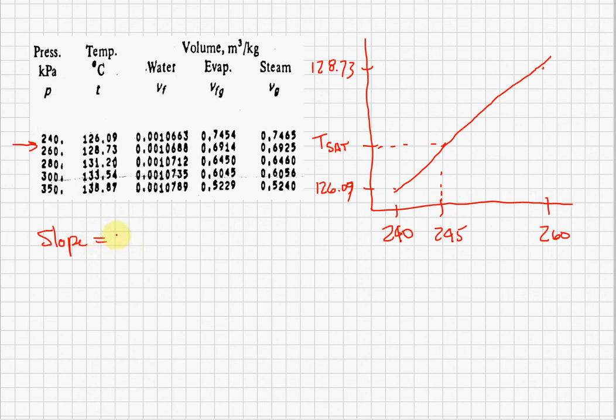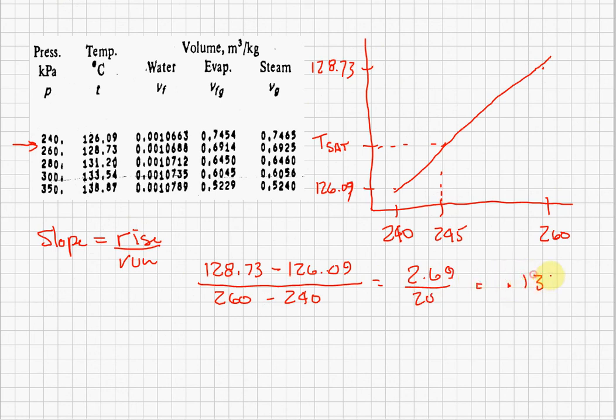And you should recall that the slope of the line is equal to the rise divided by the run. And so in this case, what is the rise? Well, the rise is going to be 128.73 minus 126.09. That's how far the graph went up. And what is the run? Well, the run is going to be the distance along, which is 260 minus 240. And if I do that math, I get 2.69 divided by 20, or my slope is equal to 0.132.